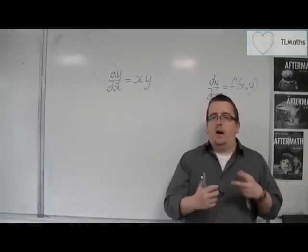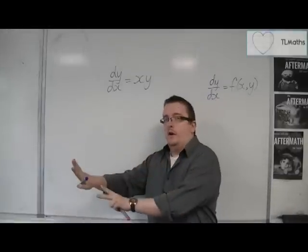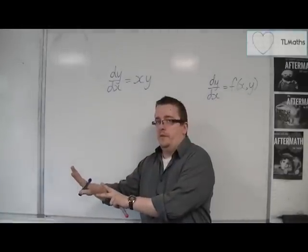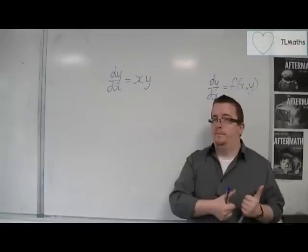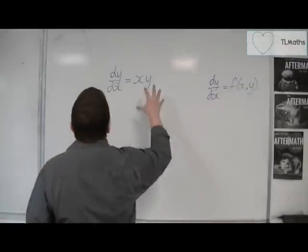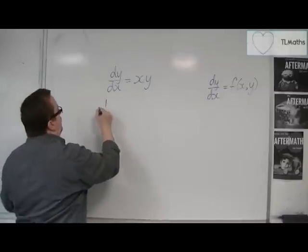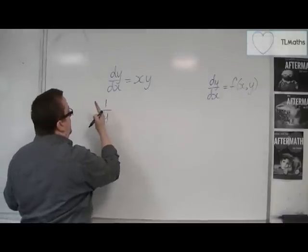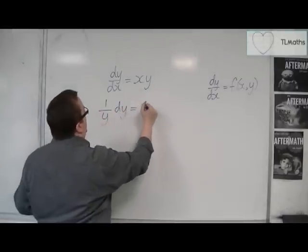So effectively, I'm going to move everything that has a y over to the left-hand side, and everything that has an x over to the right-hand side. So I'm going to make sure that I divide both sides by y in order to get the y over on the left-hand side, and then I'm going to multiply both sides by the dx.